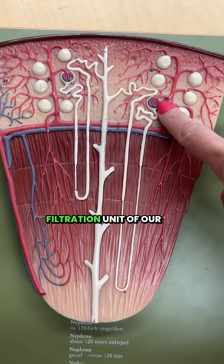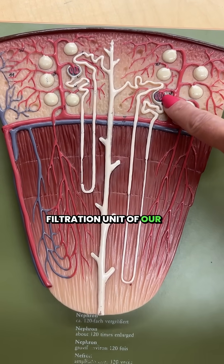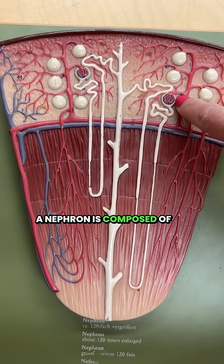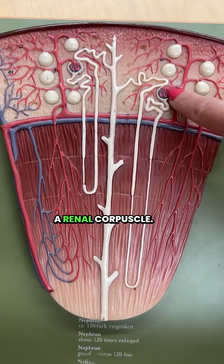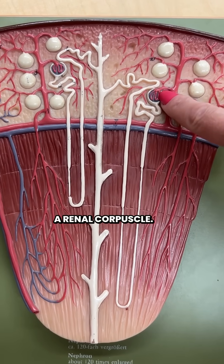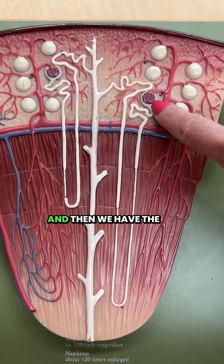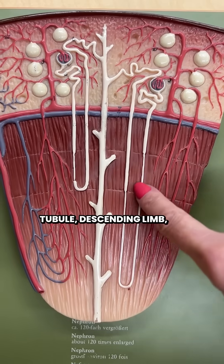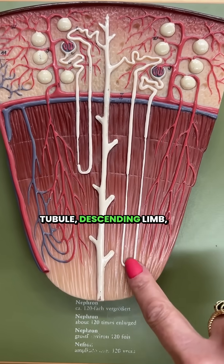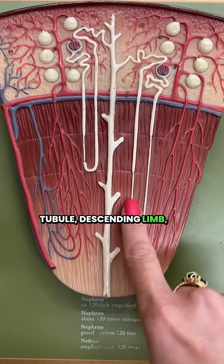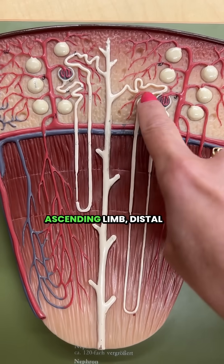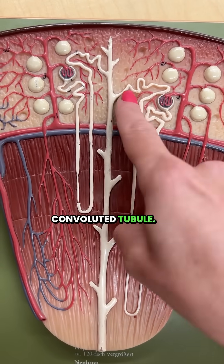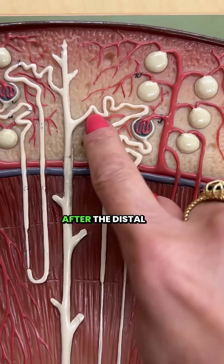A nephron is the filtration unit of our kidneys. A nephron is composed of a renal corpuscle, and then we have the proximal convoluted tubule, descending limb, ascending limb, and distal convoluted tubule. The nephron ends right there.